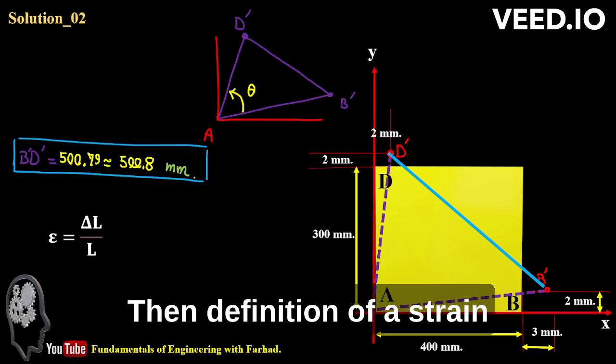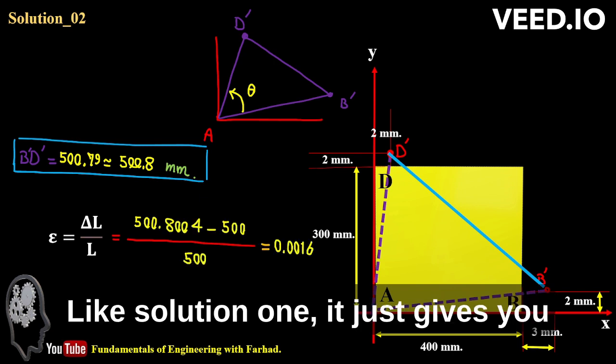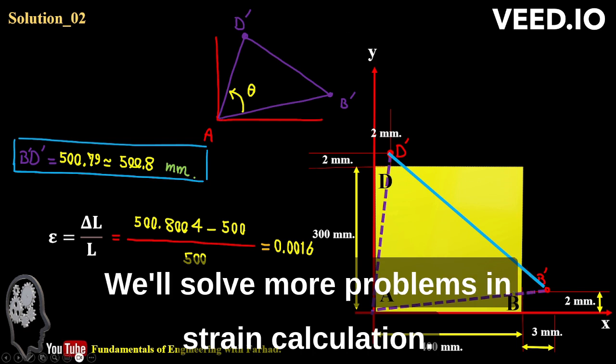And then definition of strain is delta length over length like solution one. It just gives you the same numeric value of 0.0016. Thank you. We'll solve more problems in strain calculation.